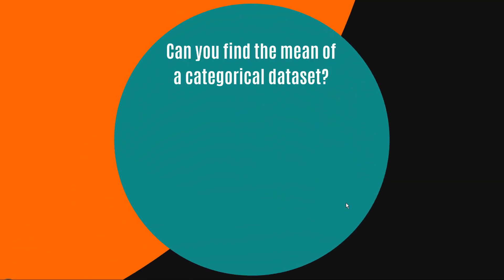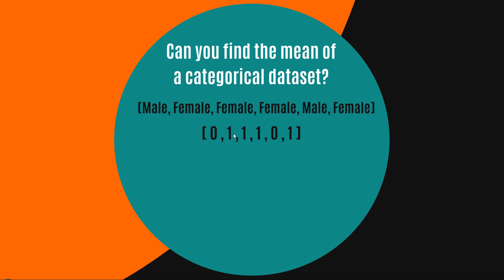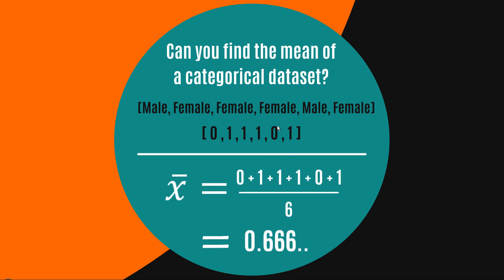Now let's see if we can find the mean of a categorical data set. Here we have one with just 'male' or 'female' — let's say it's a litter of dogs and we want to find the mean sex. It doesn't sound right, but is it possible? Not as written, but if we define all females as ones and all males as zeros, we now have a numerical data set. We add up all those values and divide by six.